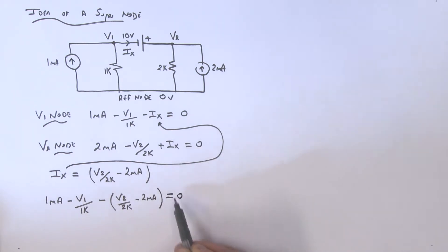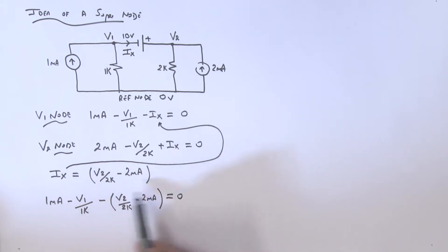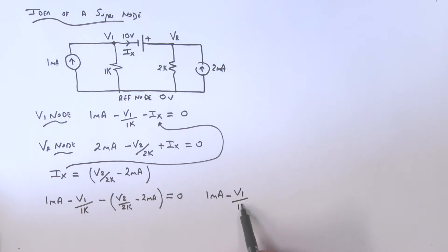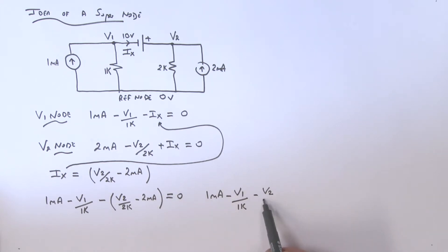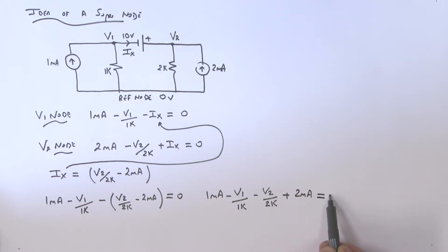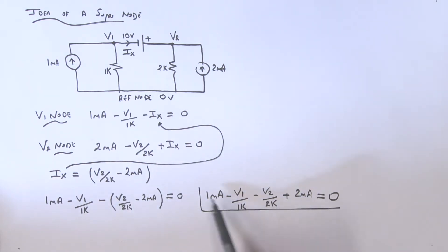Let's expand the bracket. We have 1 milliamp minus V1 over 1k, then minus V2 over 2k. The minus times minus gives us a plus 2 milliamps, and all of that is equal to zero. That's really one equation, but we've got two unknowns.